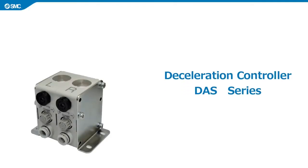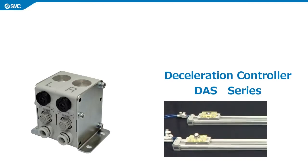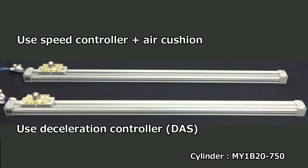We will introduce the difference in cylinder behavior using a speed controller and a deceleration controller. The above cylinder is controlled by a speed controller with a built-in air cushion, and the below one is controlled by using the deceleration controller only. Both cylinders are adjusted to actuate at the same timing.